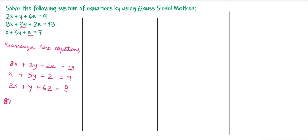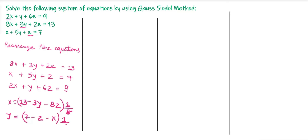Once this condition is satisfied, we rewrite the equations in the form of x, y, and z. From the first equation: x = (13 - 3y - 2z) / 8. Then y = (1/5)(7 - x - z). And z = (1/6)(9 - 2x - y).